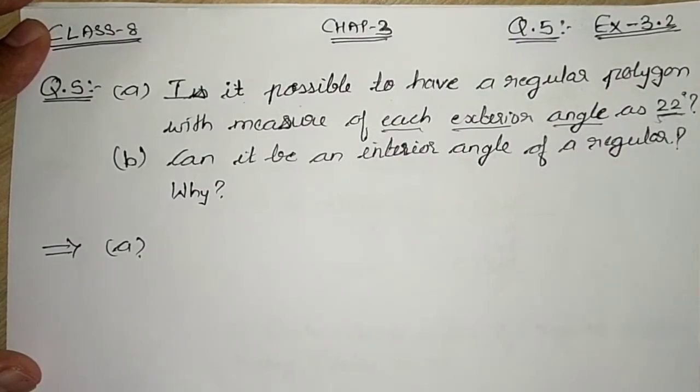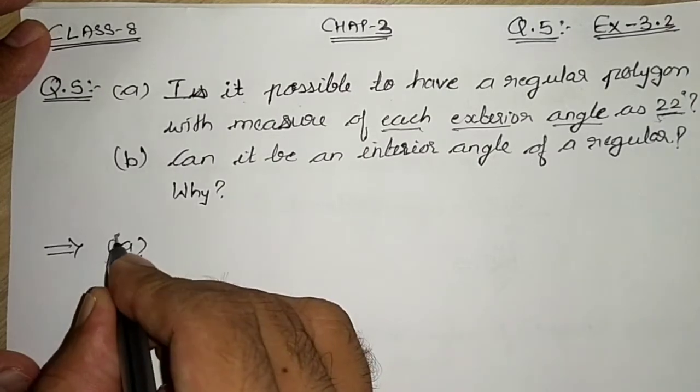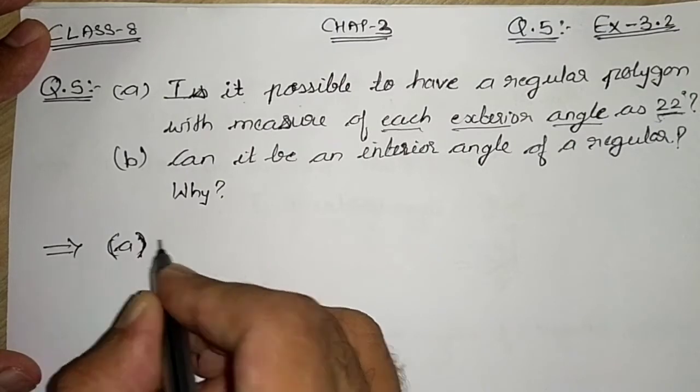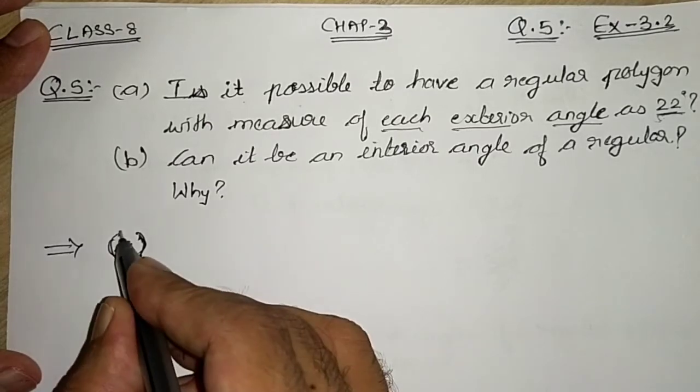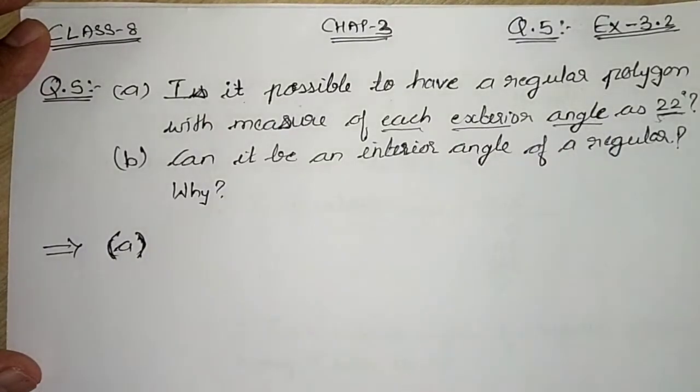If the number of sides is some positive number which is greater than 3, then it will be a regular polygon. But if it is in decimal form or any fraction form, then it will not be a regular polygon.